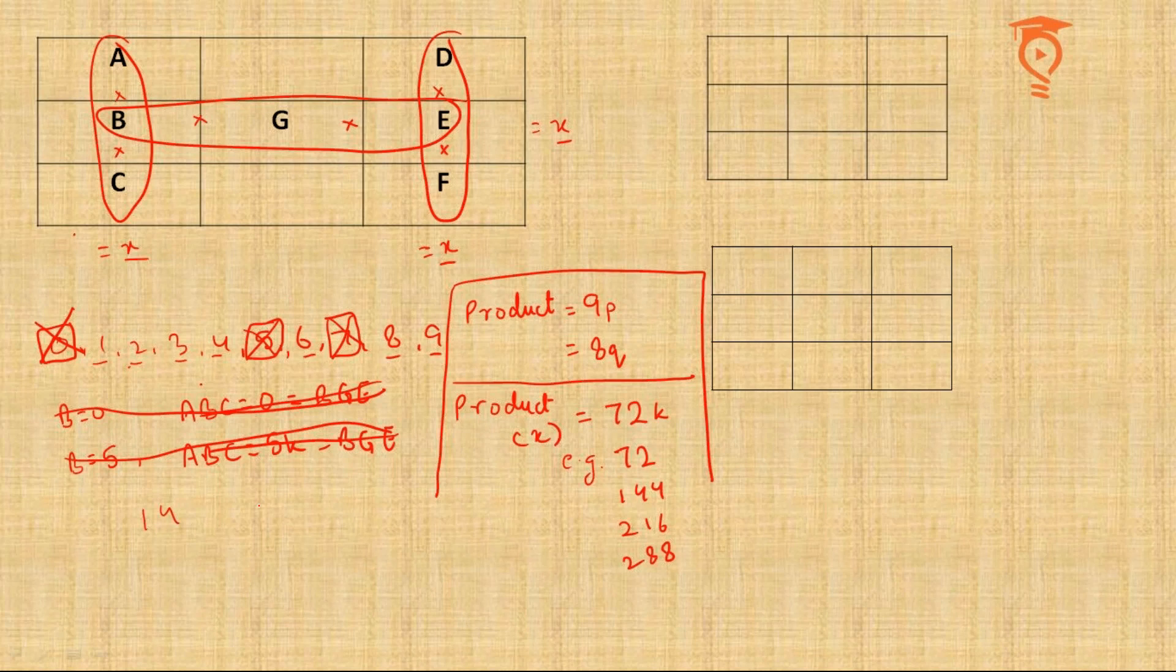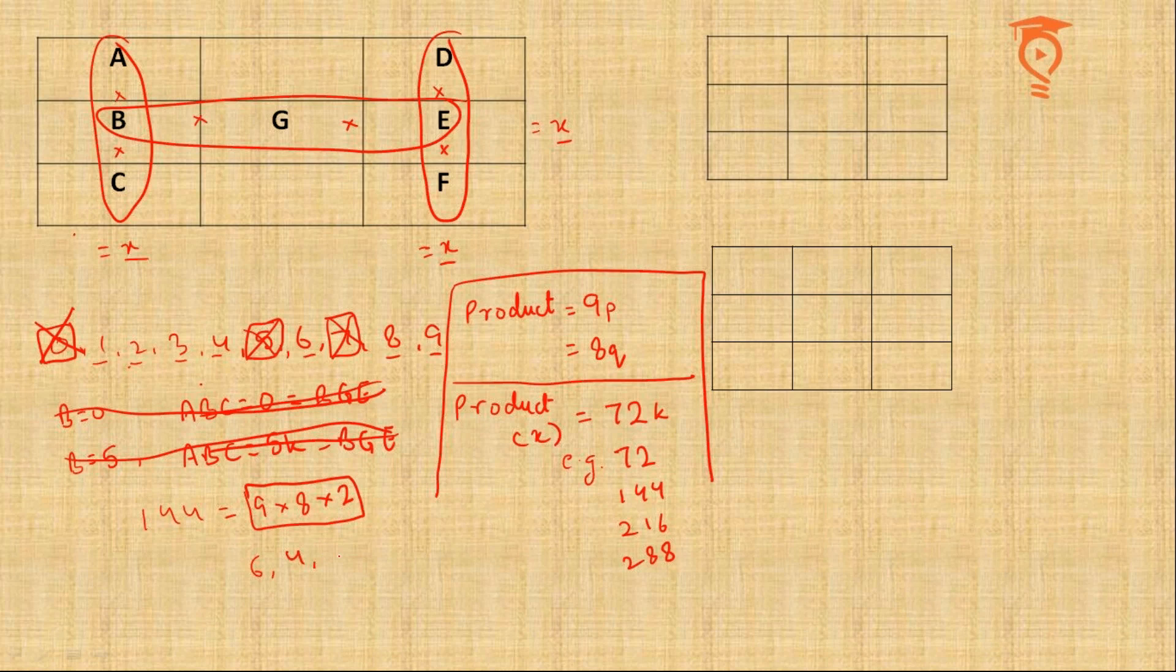And we have to make 144 two more times, which I think clearly tells me that 144 is not possible. When 144 is not possible, then higher order products have no chance at all. So I think we have found another major breakthrough in this set: this product is nothing but 72.